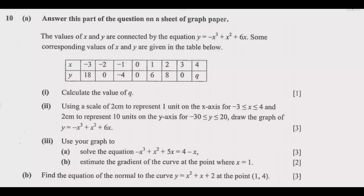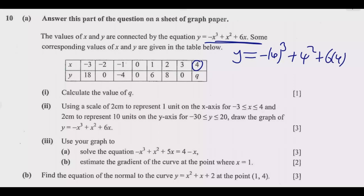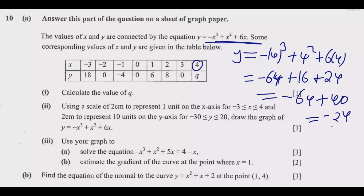To find the value of Q, we substitute X = 4 into the equation: Y = −(4³) + (4²) + 6(4). That gives us −64 + 16 + 24. The negative one is outside, so you raise 4 to the power 3 and then multiply by −1, giving −64. Then −64 + 40 = −24. So Q = −24.